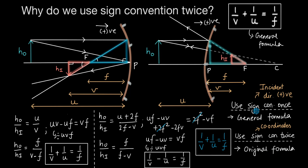The same idea is also applicable for lenses. Even in lenses, we use sign convention twice — once when deriving the lens formula and secondly when solving problems. We use it once to get the general formula so we don't have to remember different formulas for different cases, and then a second time when we write U, V, and F as positions or coordinates so that we can go back to the original formula.